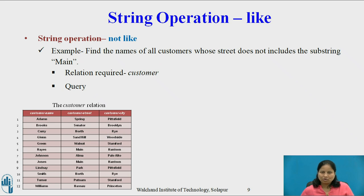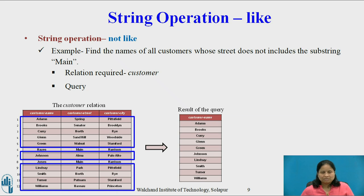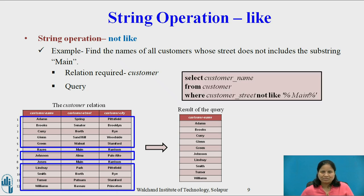Now consider the NOT LIKE operation example: find the name of all customers whose street does not include the substring 'main'. From the customer table, except for tuples 6 and 8, all other tuples do not contain 'main' in the street. The result contains 10 customer names. The query is: SELECT customer_name FROM customer WHERE customer_street NOT LIKE '%main%'.